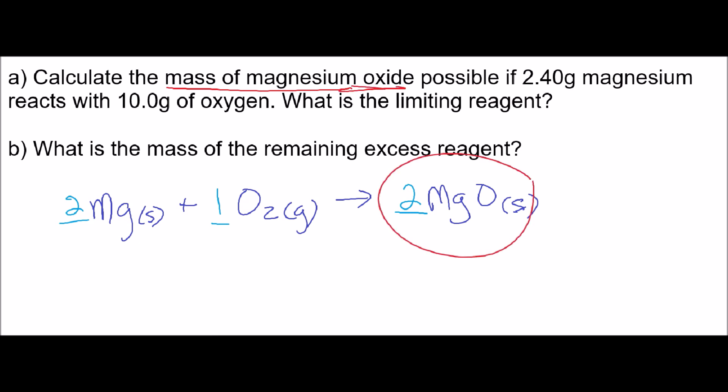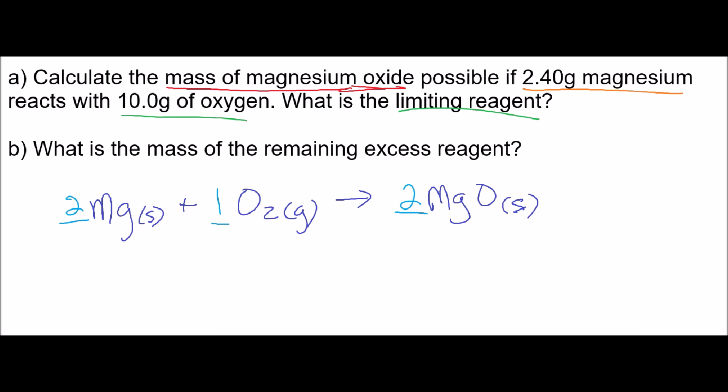The question is asking us to find the mass of magnesium oxide, and it's giving us both reactants — so we're going to have to do stoichiometry twice. Once with the magnesium metal and once with the oxygen. Then we'll figure out what the limiting reagent is and the excess reagent.